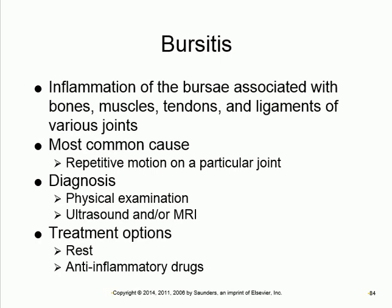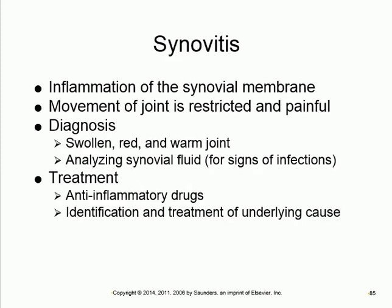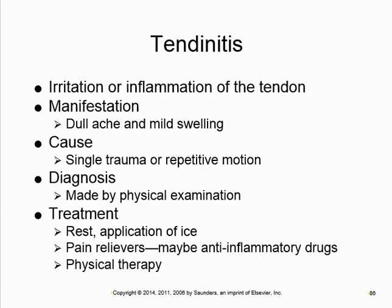Treatment of ankylosing spondylitis is mainly NSAIDs for pain and physiotherapy — there's no cure. Other inflammatory joint conditions include: bursitis (inflammation of the bursa — fluid-filled sacs in joints that minimize friction between bones), synovitis (inflammation of the synovial membrane), and tendinitis (inflammation of the tendons). In all these conditions, inflammation causes pain, swelling, and reduced function.